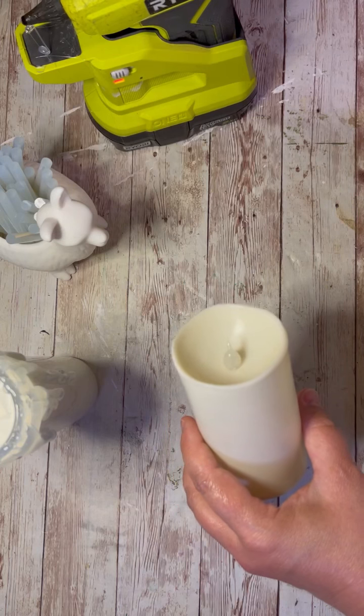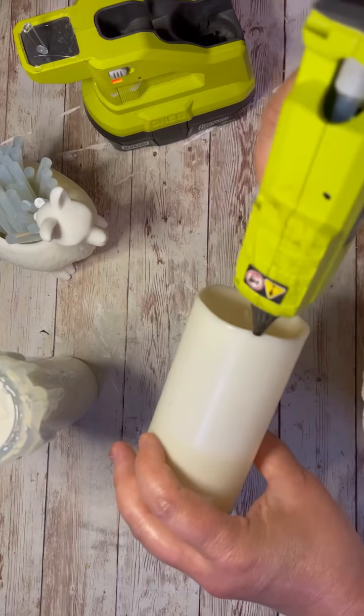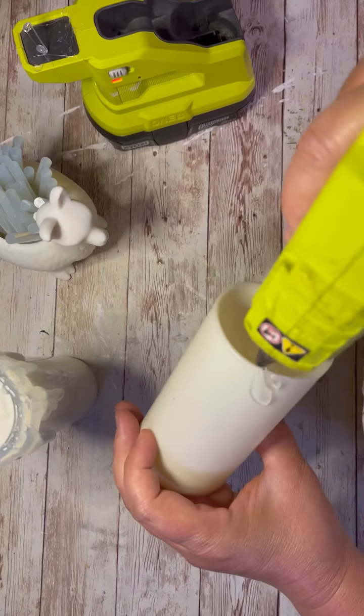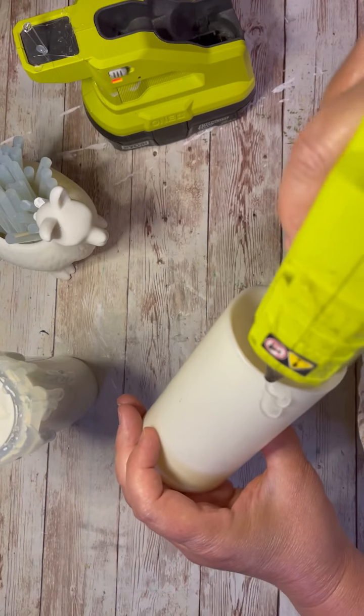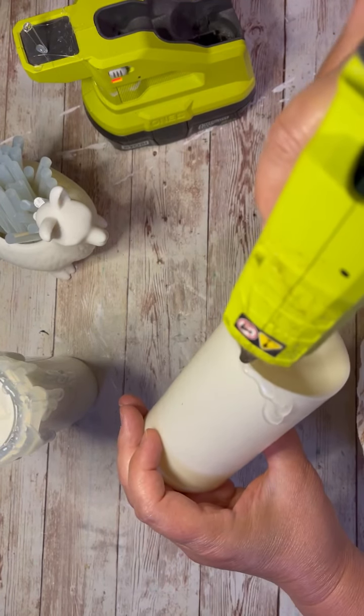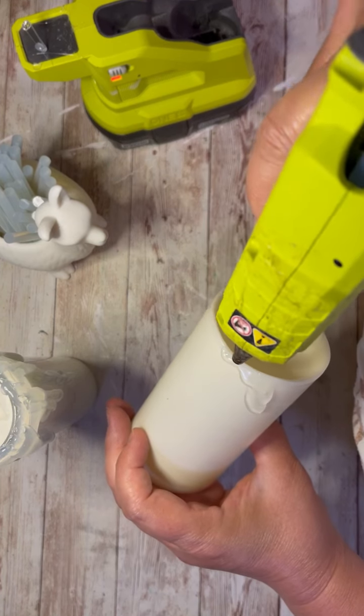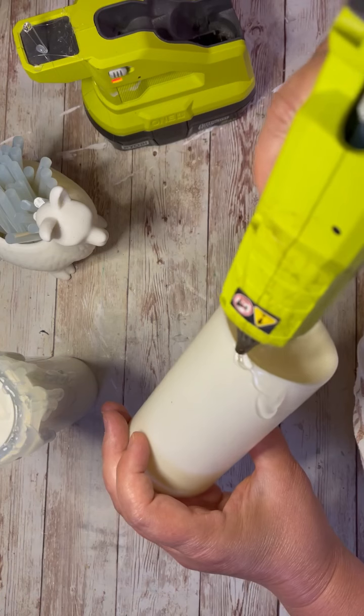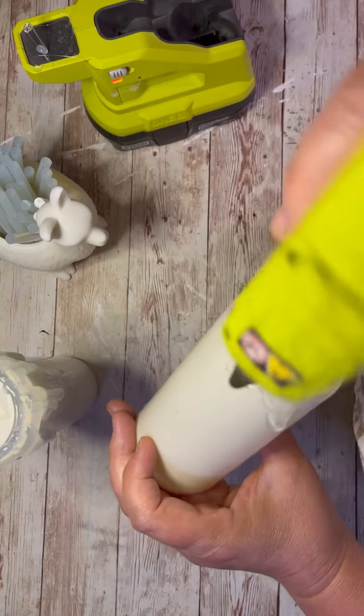So this was an accidental project. I was working on something else, and this is what I did. I took these battery-operated candles from Dollar Tree, and I took my hot glue gun, and I'm just putting like globs of glue around the edge so that it kind of drips down the side of the candle.